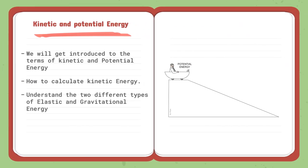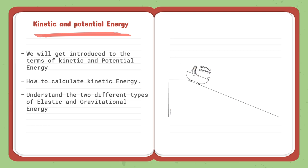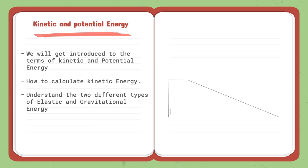Moving on to the second lesson, which is kinetic and potential energy. We will get introduced to the terms of kinetic and potential energy, how to calculate energy, and understand the two different types: elastic and gravitational energy. Kinetic energy is energy that has to do with speed and movement, while potential energy has to do with height or gravity. There are two types of potential energy — elastic, stored in elastic or rubber bands, and gravitational, stored at a height against Earth's gravity. We will also know how to calculate kinetic energy using simple equations.